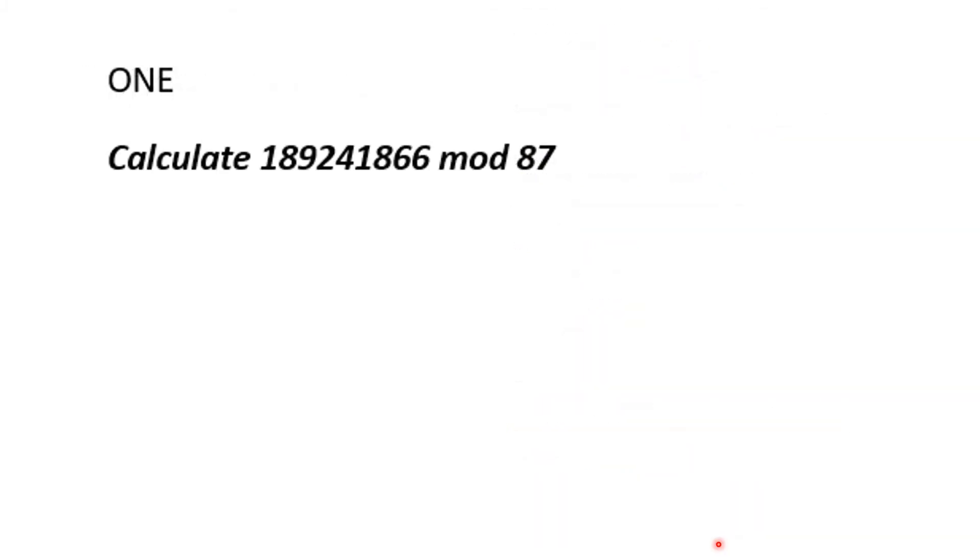Let's talk briefly about what the problems are, and then we'll be finished. Problem number one is you're to calculate this number mod 87. This is a function that we learned in the lecture on chapter 3.1.